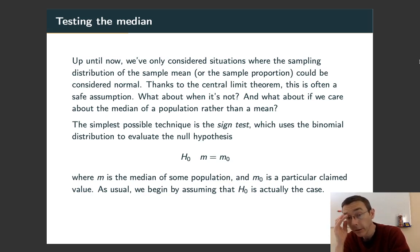The mean is a particularly natural thing to use for statistical inference because of the central limit theorem, which says that as long as n is large, the sampling distribution of the sample mean is always going to be approximately normal.